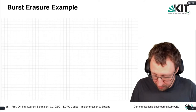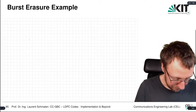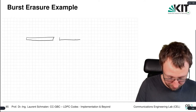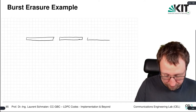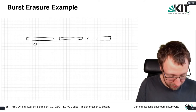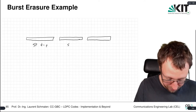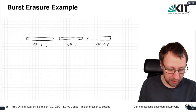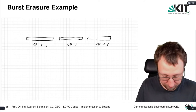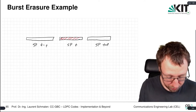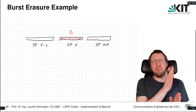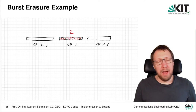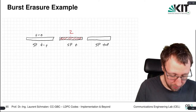So what is a burst erasure? We have the following scenario: we have a couple of spatial positions — spatial position t minus one, spatial position t, and spatial position t plus one. And we lose a complete spatial position. It's not transmitted at all; all the bits in this spatial position are fully erased. We assume that the other spatial positions have no erasures.